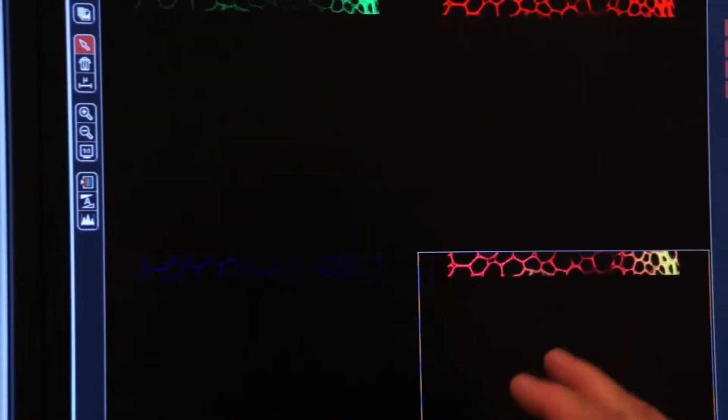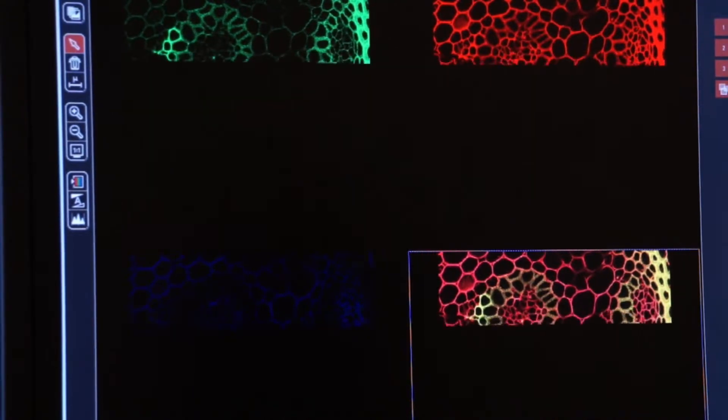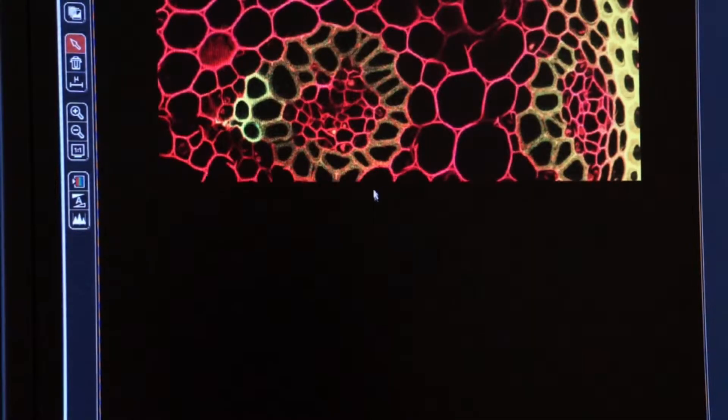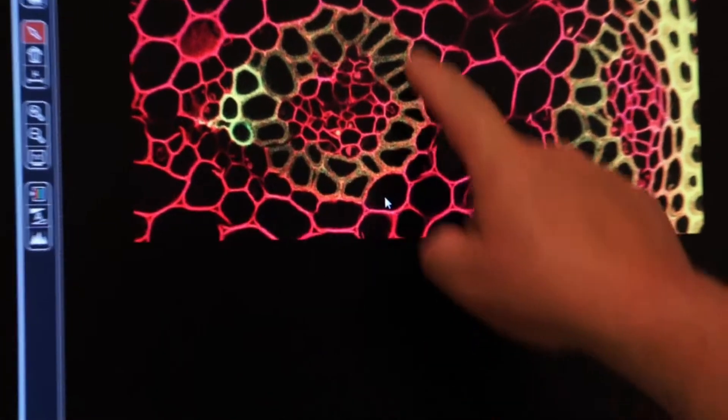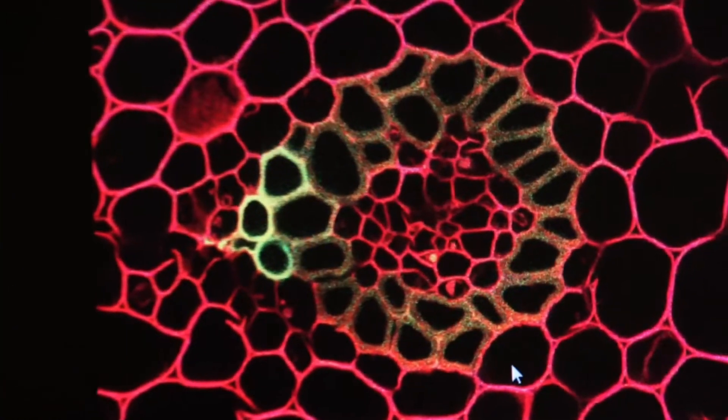Again, it's slower. Why? We're scanning each line five times. But when you look at the result in image, you'll see that a lot of the noise has gone away and a lot of the pixelation has gone away.